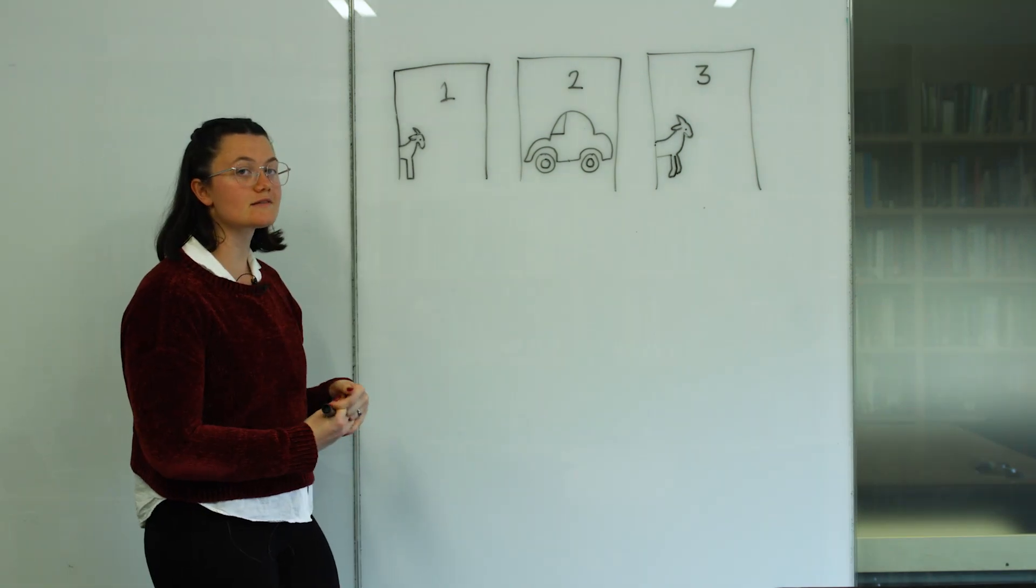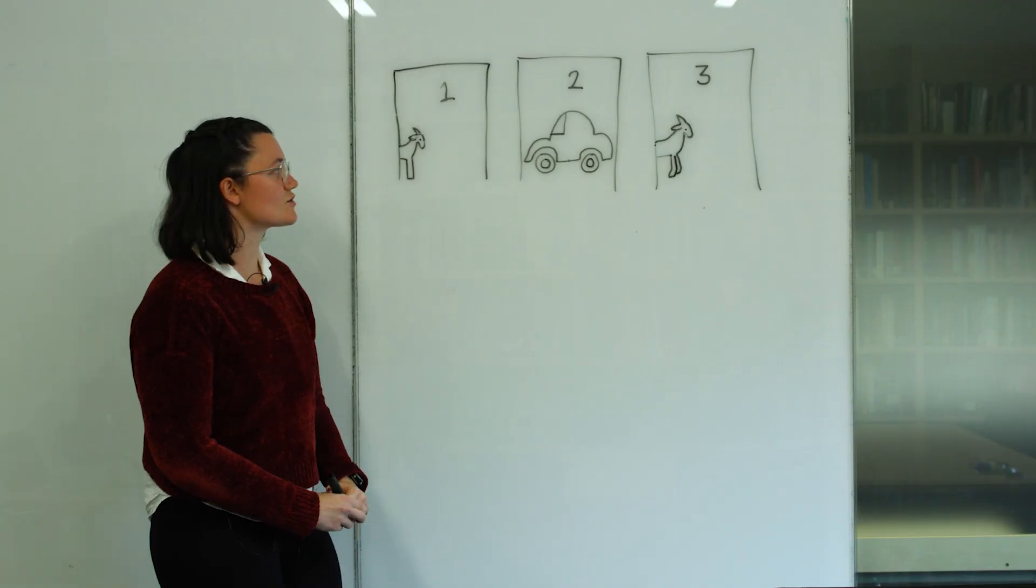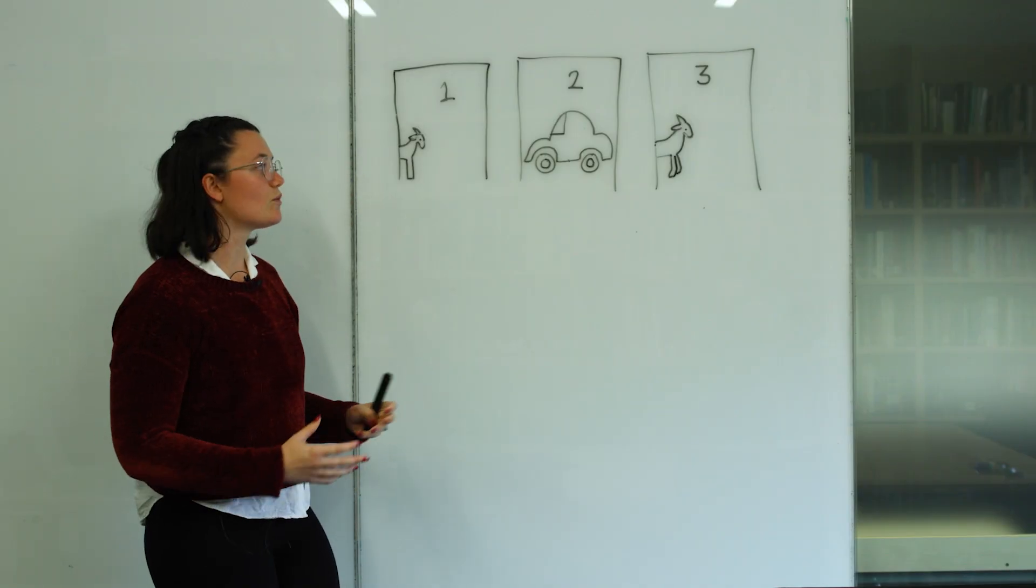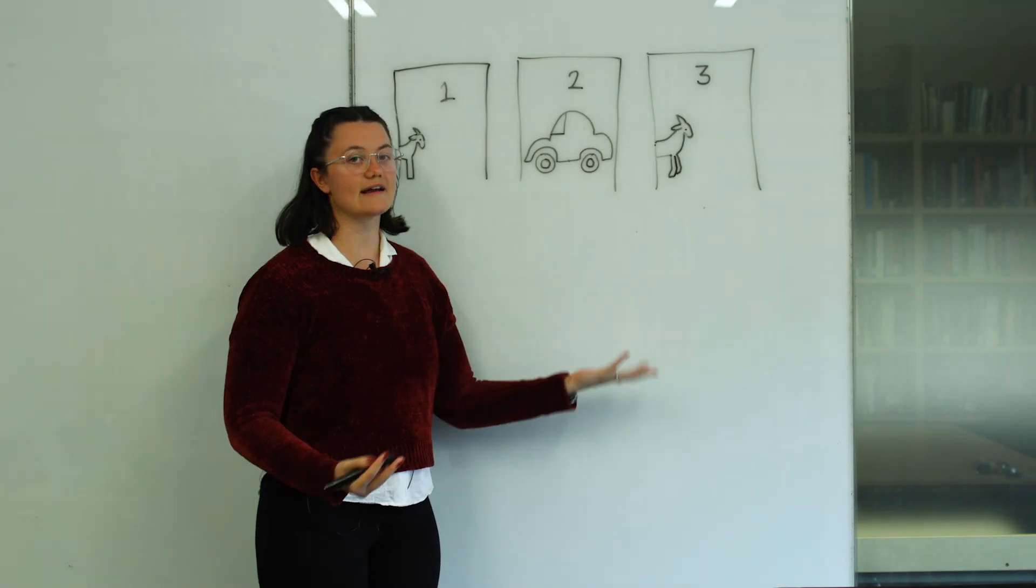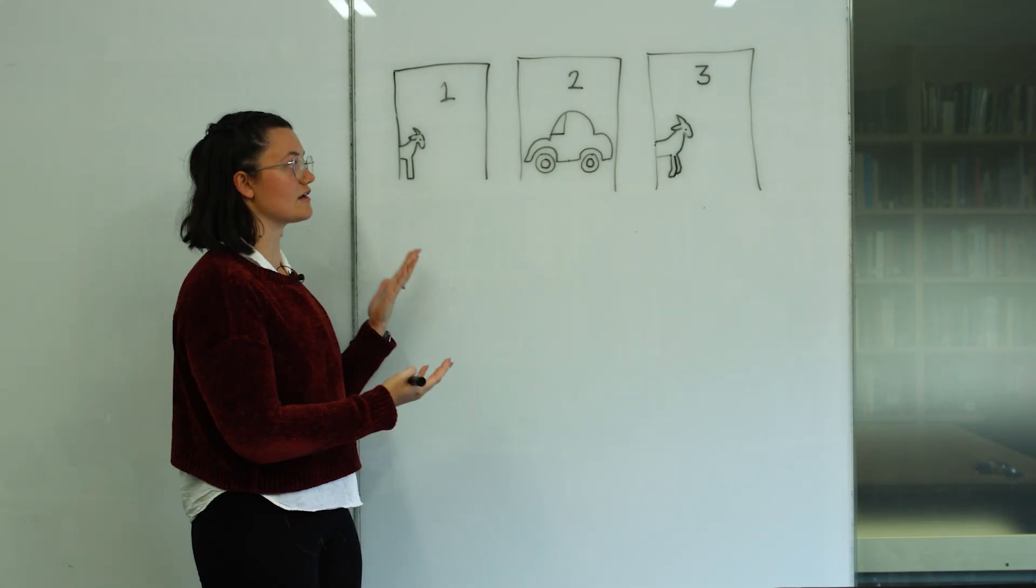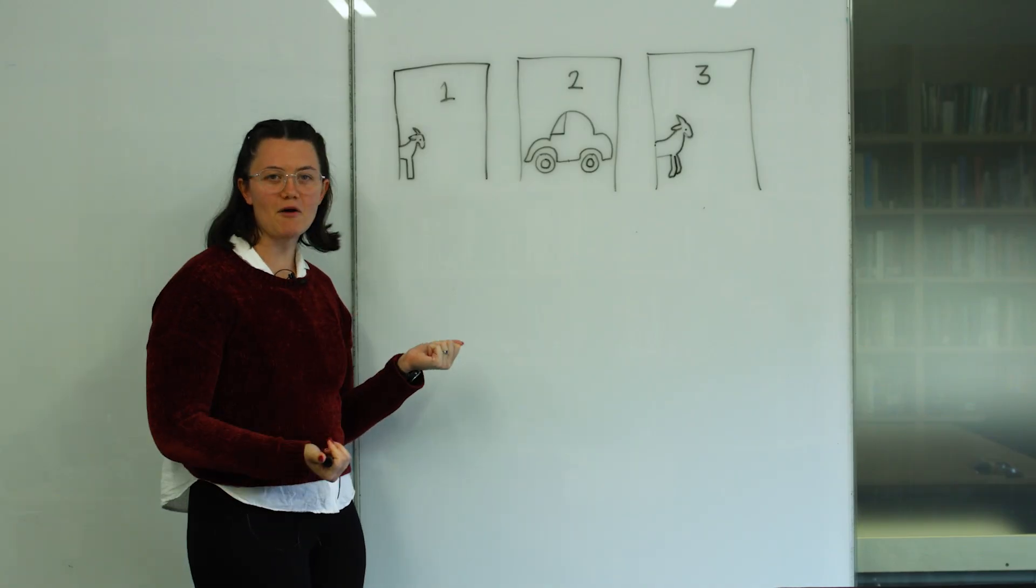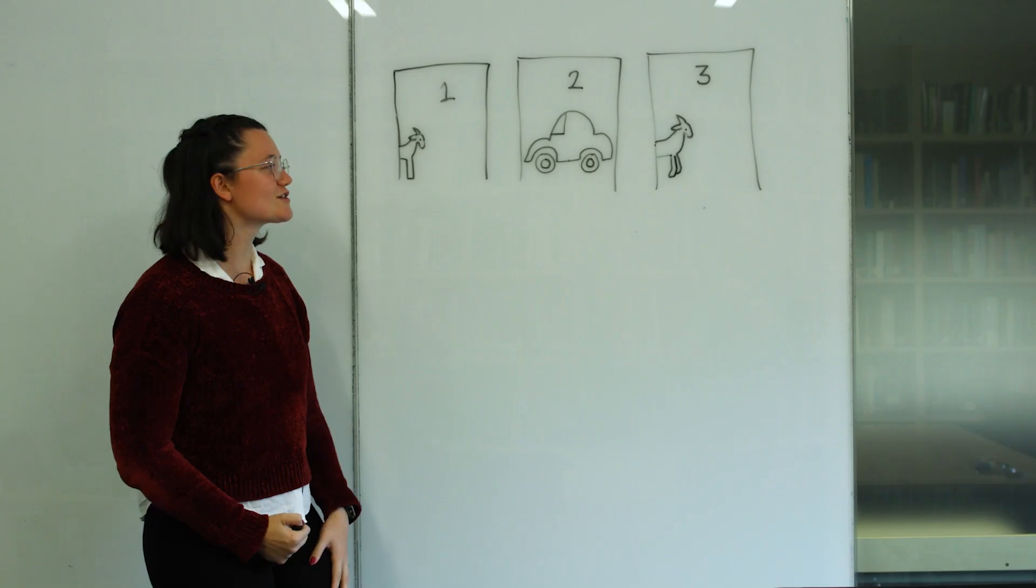And most people tend to get this wrong. In fact, in some studies it was as low as like 13% of people made the right choice here. I think intuitively, once one door with the goat behind it is taken out of the question, people assume that there's a 50-50% chance that the car is behind the door that you've already chosen. And then I'm sure psychologically people have their lucky numbers or they're stubborn and they don't want to change given the choice.